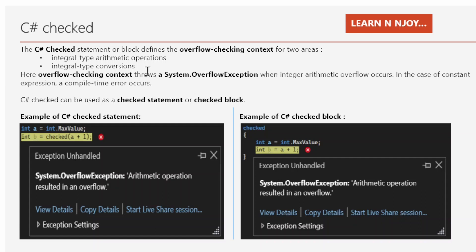You must be thinking: what is overflow checking context? Overflow checking context means that when an integer arithmetic overflow occurs — by performing integral type arithmetic operations or conversion — it throws a System.OverflowException at runtime. In the case of a constant expression, a compile-time error occurs.